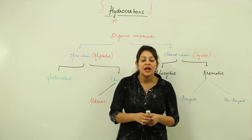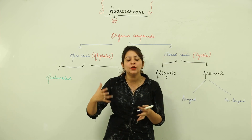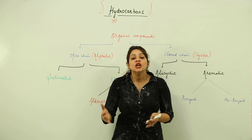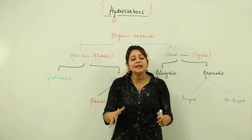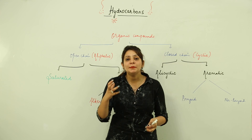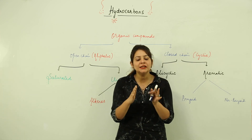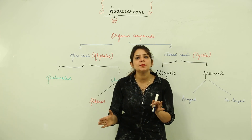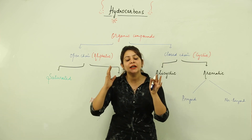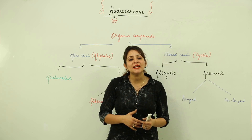That versatility is why we get to see so many compounds in nature, and that is why we have a separate branch of chemistry in which we just study carbon and its compounds. Organic compounds are derived from plants and animals and are mainly formed of carbon. They may contain some other elements in traces, but it is compulsory that they will contain a carbon atom.